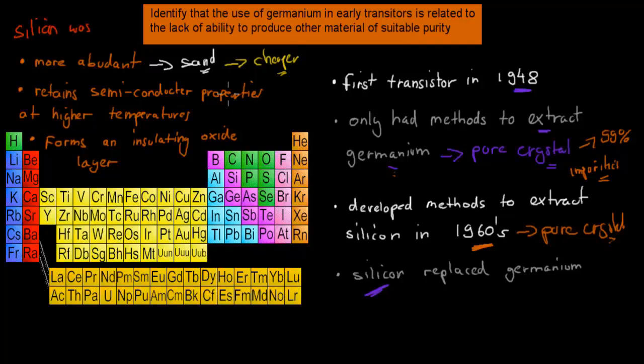It also retains the semiconductor properties at higher temperatures. When we increase temperatures, semiconductors would usually become a bit more conductive - their conductivity would go up a bit. But the problem is for germanium, if we increase temperatures, germanium would more or less almost turn into a conductor. And so germanium would turn into a conductor at high temperatures, and that's not what we wanted. That's not good, because we don't want germanium to be a conductor - we want it to be a semiconductor.